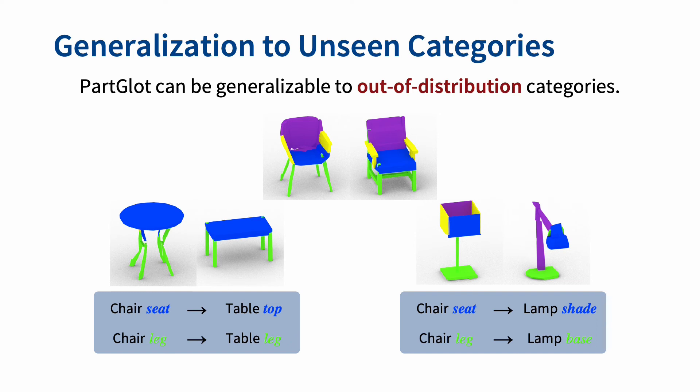We also find that our PartGlot trained with linguistic descriptions can be zero-shot generalizable to other classes of 3D shapes. For instance, when training with chair dataset and testing with tables and lamps, PartGlot detects the table top and lamp shade as chair seat and also the table leg and lamp base as chair leg.